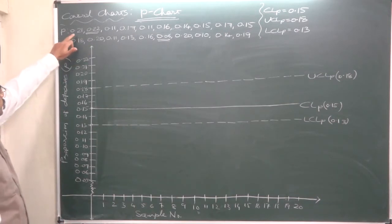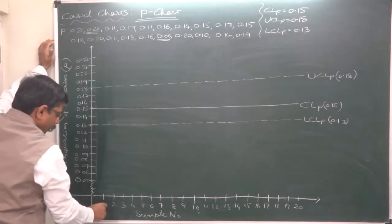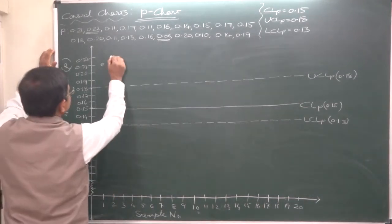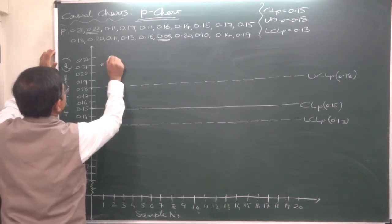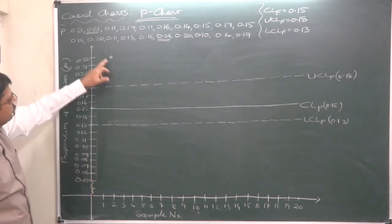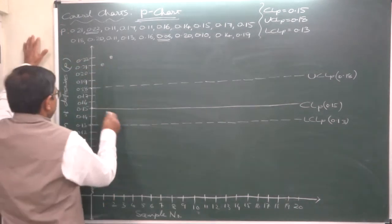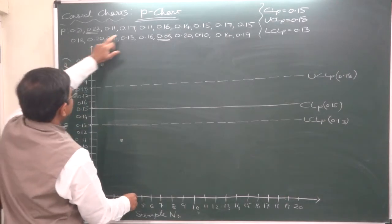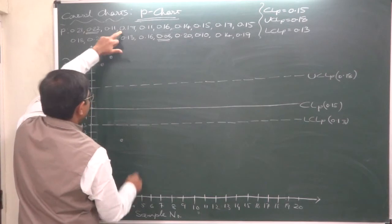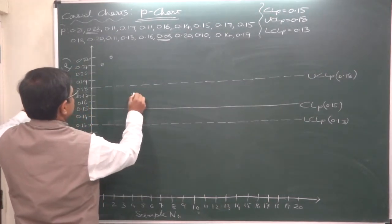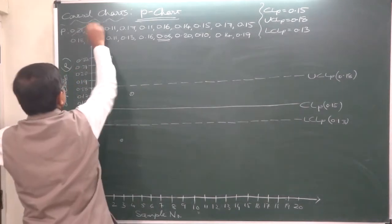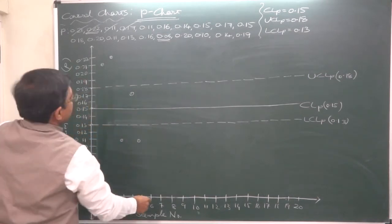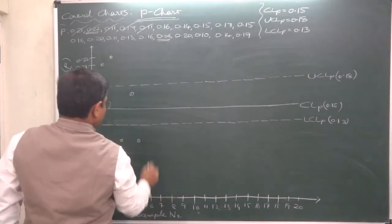Now plotting. Sample 1 is 0.21 — plot it accurately at sample number 1 against 0.21. Sample 2 is 0.22 — at the intersection of sample 2 and 0.22. Sample 3 is 0.11. Sample 4 is 0.17. Sample 5 is again 0.11. Sample 6 is 0.16, which is between the central line and upper control limit.